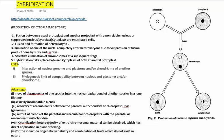Hello, today we are going to discuss cybridization. Cybridization is the production of the cytoplasmic hybrid. It is a type of hybrid formation where the protoplast of one parent contributes only nucleus and the protoplast of both the parents contribute to the cytoplasm.